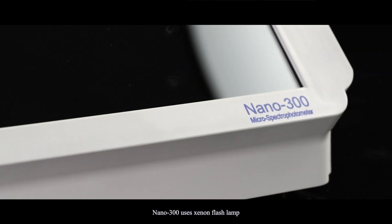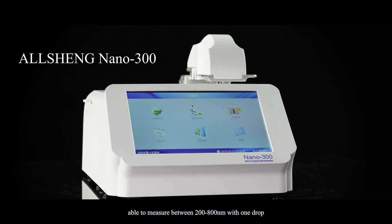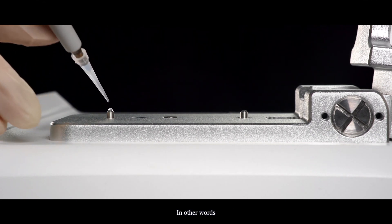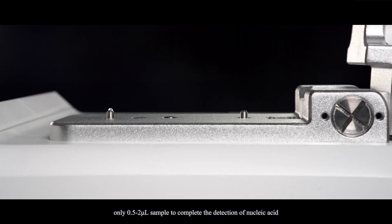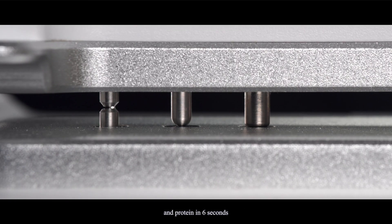Nano 300 uses Xenon flash lamp, able to measure between 200 and 800 nanometers with one drop. In other words, only 0.5 to 2 microliter sample to complete the detection of nucleic acid and protein in 6 seconds.